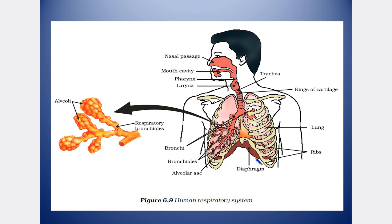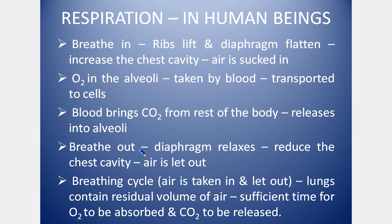The chest cavity expands and the diaphragm moves. Air travels through cartilage, trachea, and bronchioles. The body carries carbon dioxide through the blood vessels to the alveoli. In the alveoli, through bronchioles, trachea, and nostrils, carbon dioxide is removed when we breathe out.